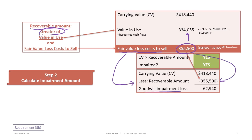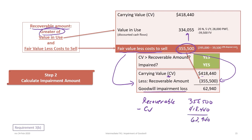To calculate the impairment loss, we take the carrying value of $418,440 minus the recoverable amount of $355,500. Alternatively, taking $355,500 minus $418,440 gives a negative value of $62,940. Either way, we think of goodwill in absolute values, so the goodwill impairment loss is $62,940.